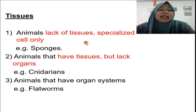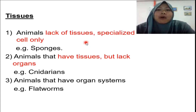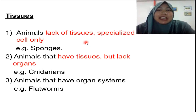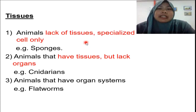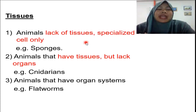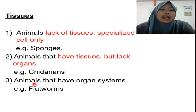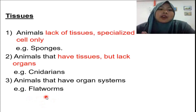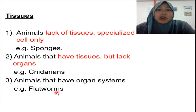Some other animals have tissue but are lacking organs. This is the next hierarchy in the kingdom Animalia — animals in the phylum Cnidaria, like jellyfish, have tissue but lack organs. Animals starting from phylum Platyhelminthes onwards show organ systems.